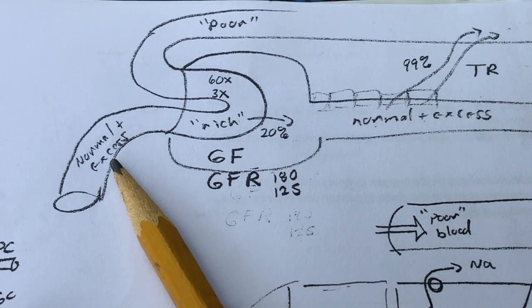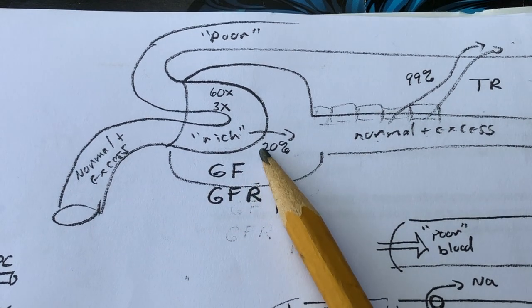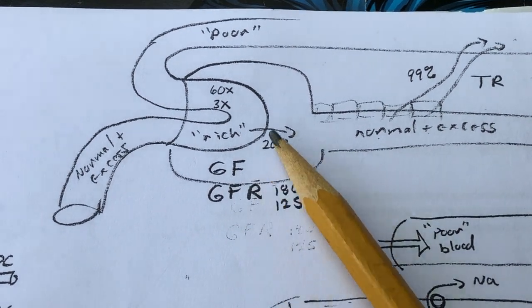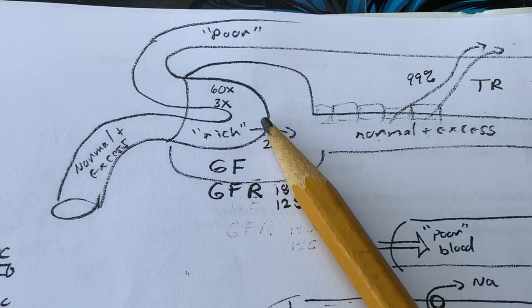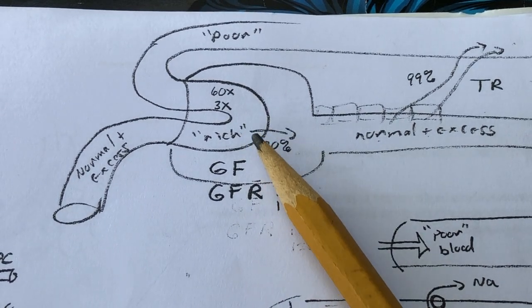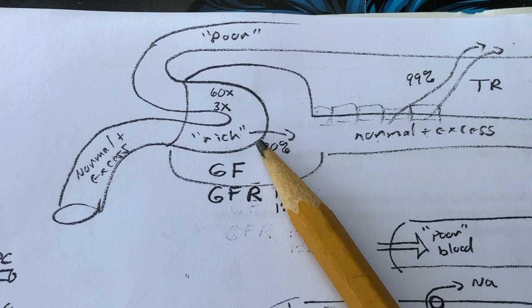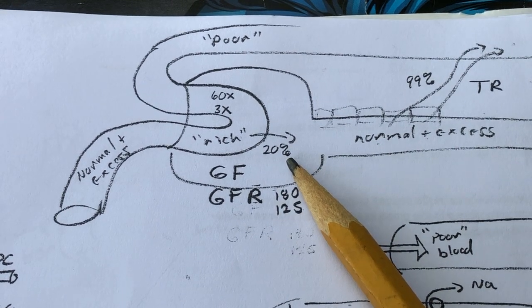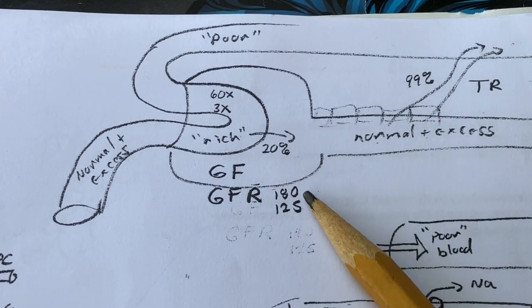With glomerular filtration, the smaller objects—things smaller than five nanometers—are pushed through the filtration membrane and become filtrate. Approximately 180 liters per day are produced, or 125 milliliters per minute.